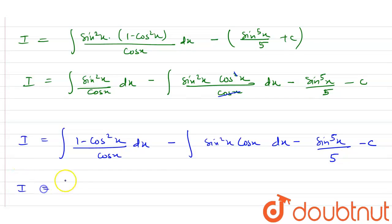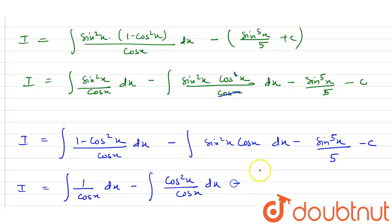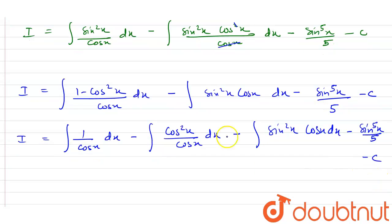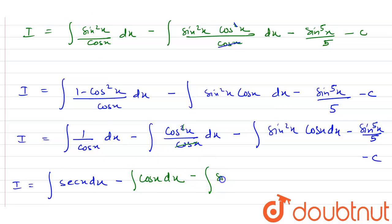Expanding further: I equals the integral of 1/cos x dx, minus the integral of cos²x divided by cos x dx, minus the integral of sin²x times cos x dx, minus sin⁵x divided by 5. Here 1/cos x = sec x, and the cos x terms in the second integral cancel to give cos x.